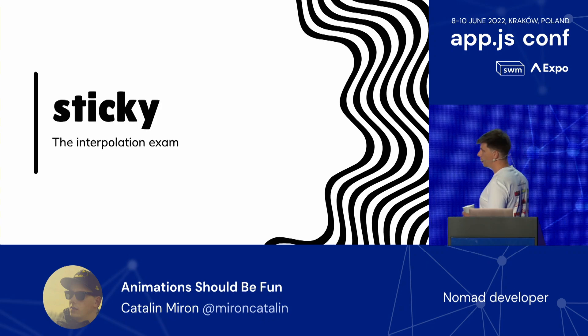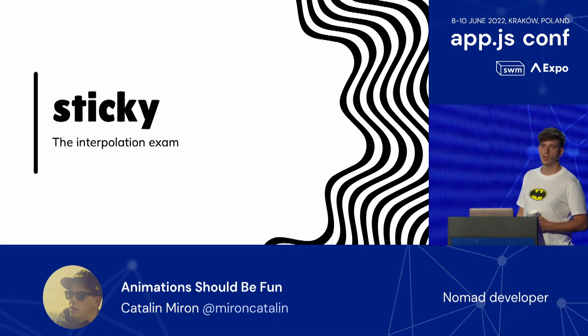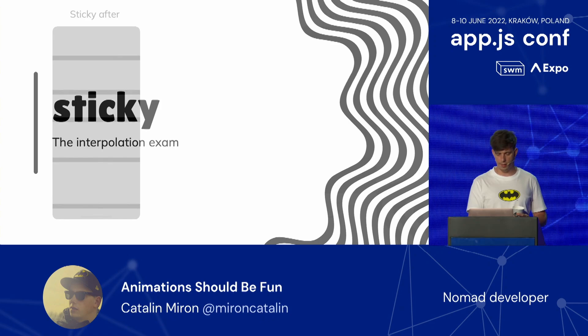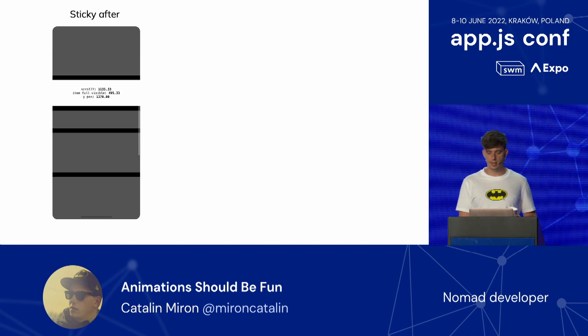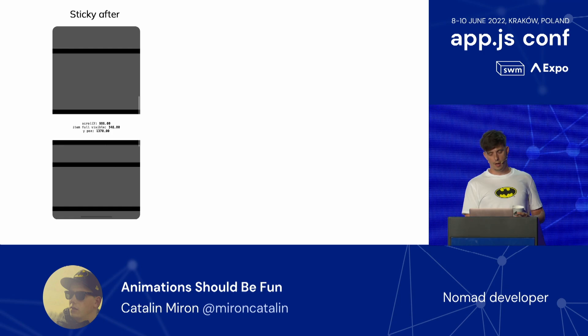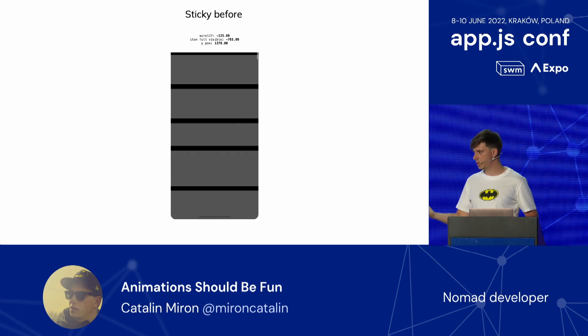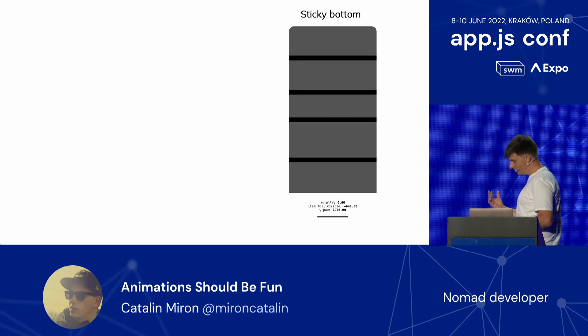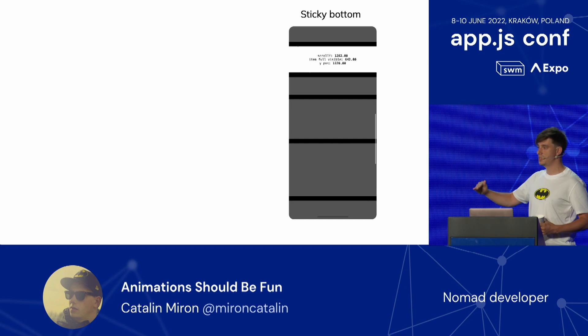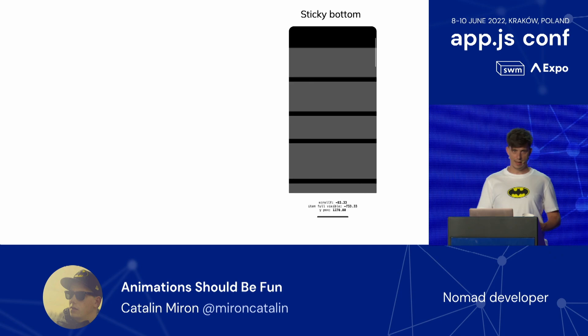The final thing about interpolation — I like to call it the interpolation exam — is when you know how to do sticky things, especially inside scroll. There are three types of stickiness. Sticky after: the element becomes sticky when its top edge equals the viewport top edge. Sticky before: the element is sticky initially, but when its top edge reaches the top edge of the viewport, it continues moving — so it stops being sticky. And sticky bottom: sticky by default to the bottom, and when the bottom edge of the sticky reaches the bottom edge of the viewport it moves along with the scroll.